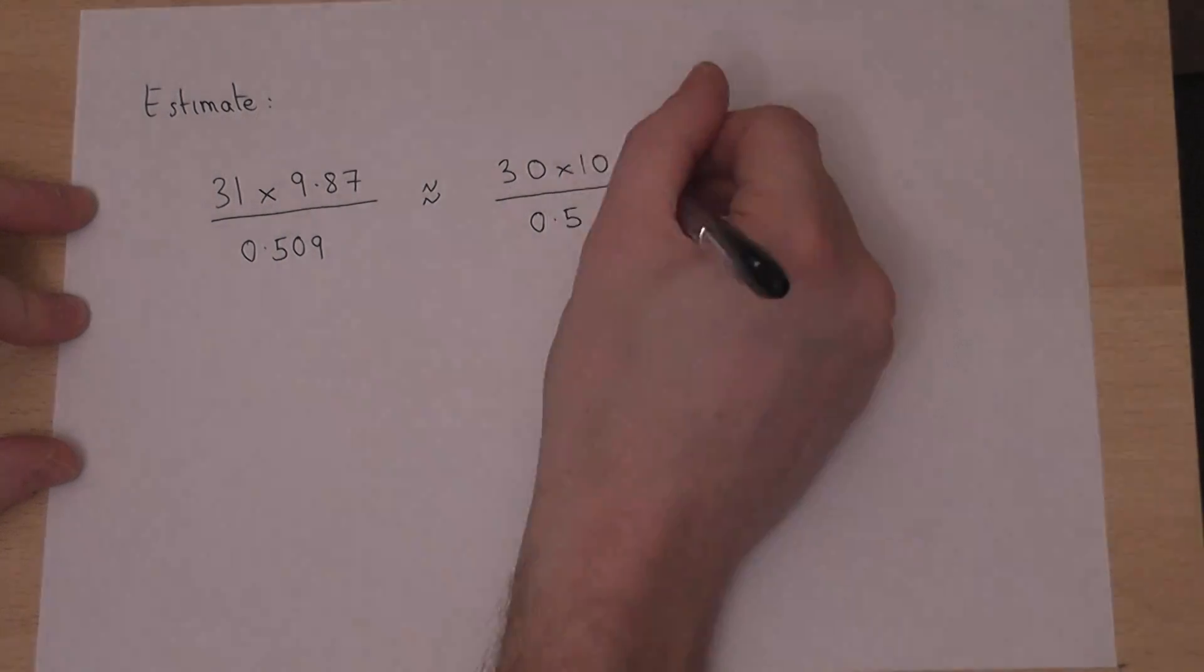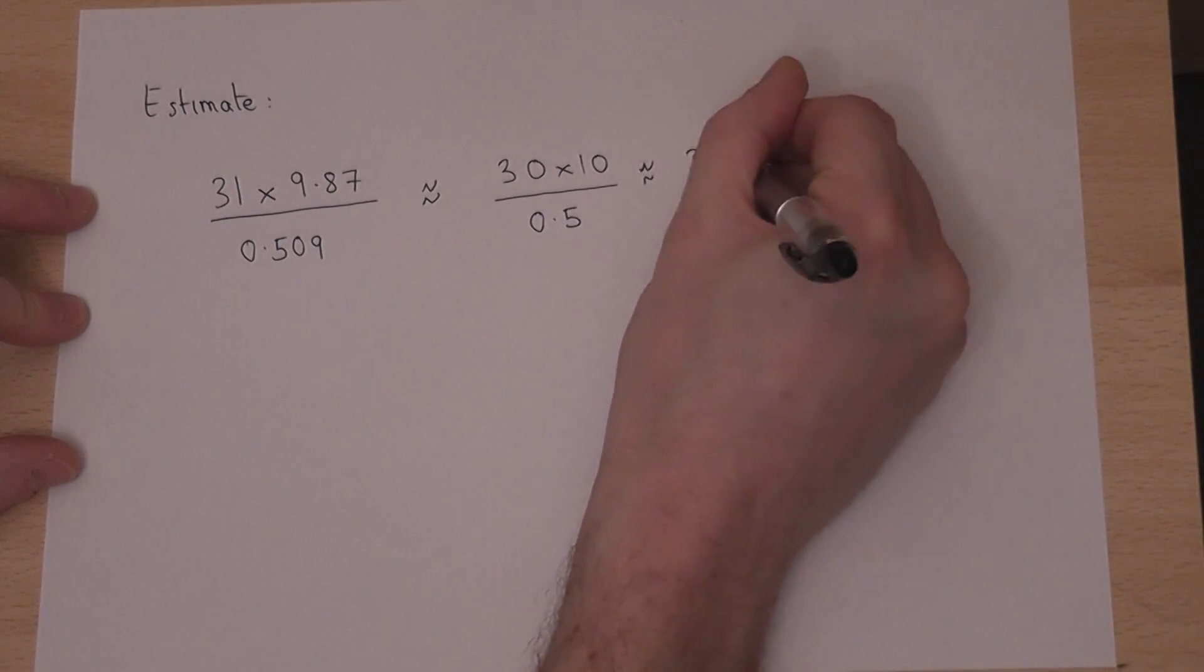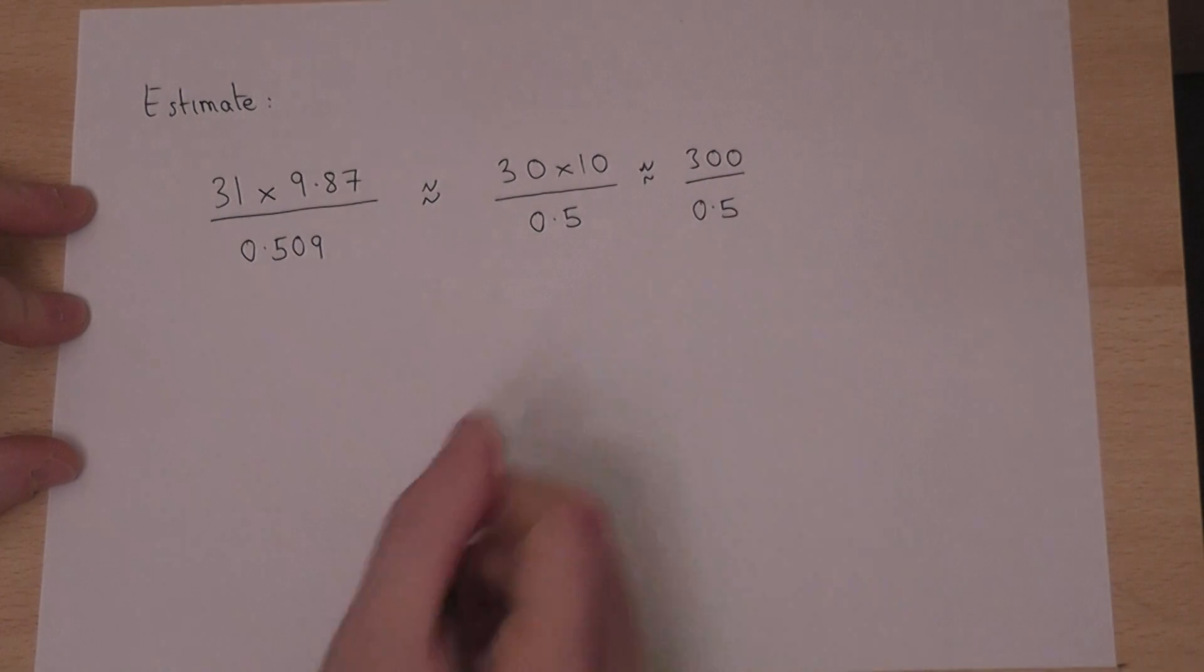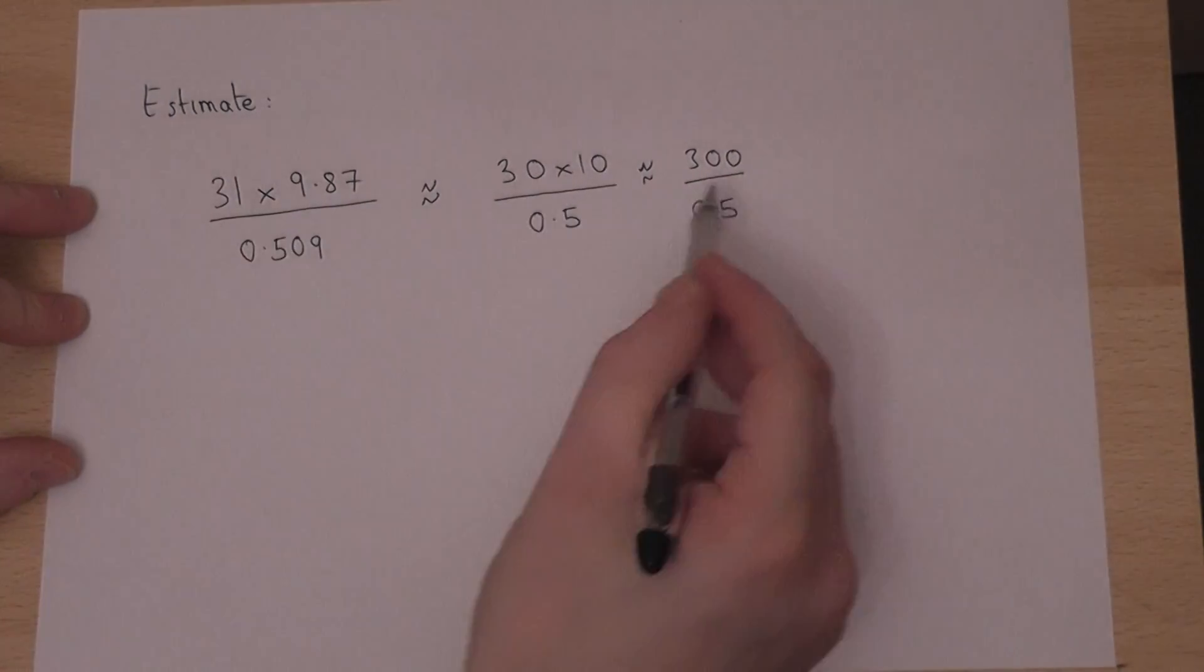The next step will be to work out 30 times 10 which is 300 and the bottom is still 0.5. So to estimate this calculation requires us to work out this.